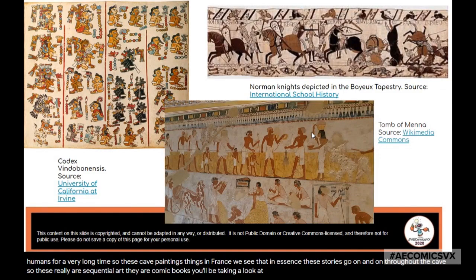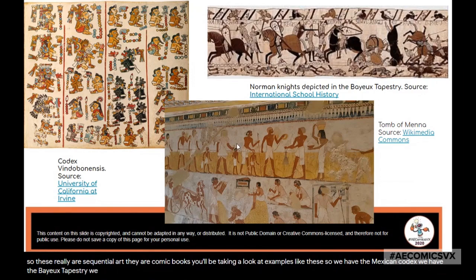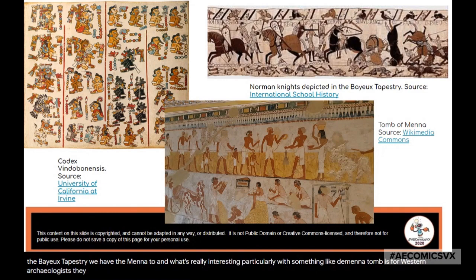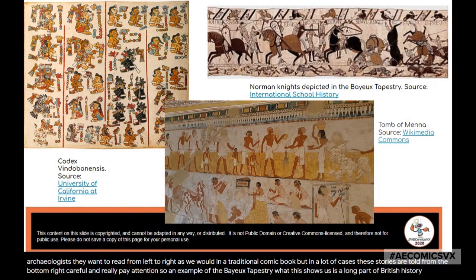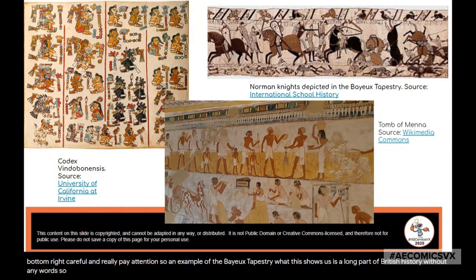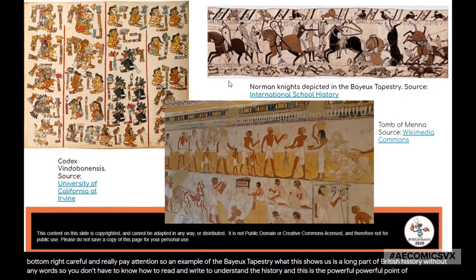You'll be taking a look at examples like the Mexican Codex, the Bayeux Tapestry, and the Menitum. What's really interesting, particularly with the Menitum, is that Western archaeologists want to read it from left to right as in a traditional comic book, but in a lot of cases these stories are told from the bottom right to the left, so you have to be careful and pay attention. The Bayeux Tapestry shows a long part of British history without any words — you don't have to know how to read and write to understand the history. This is the powerful point of visual literacy.